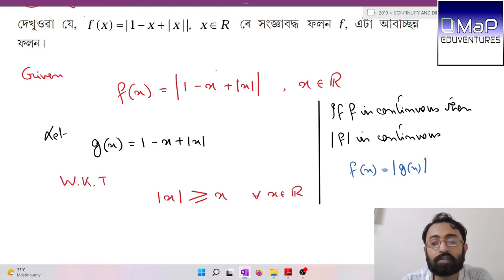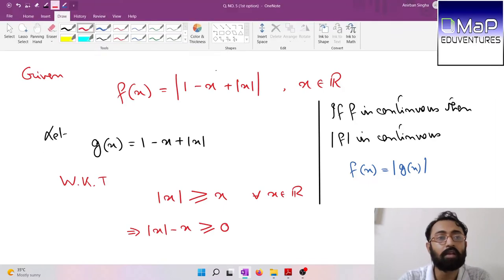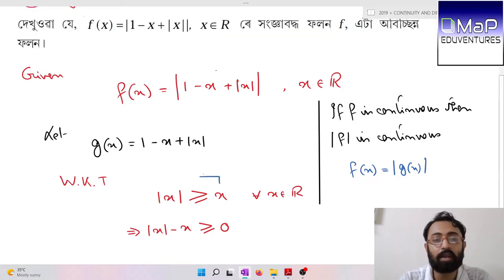|x| is always greater than or equal to x for any positive or negative numbers. If we rearrange, |x| - x is greater than or equal to 0.